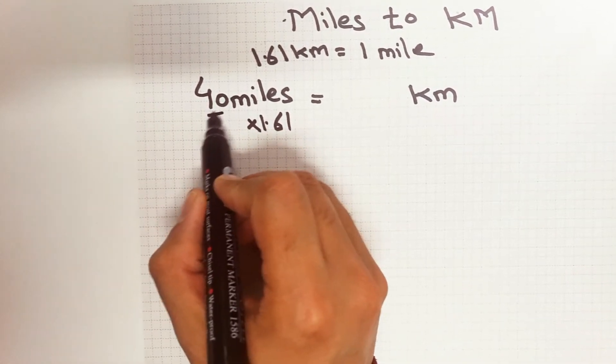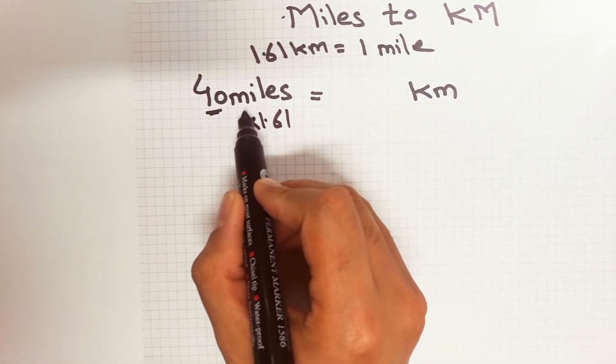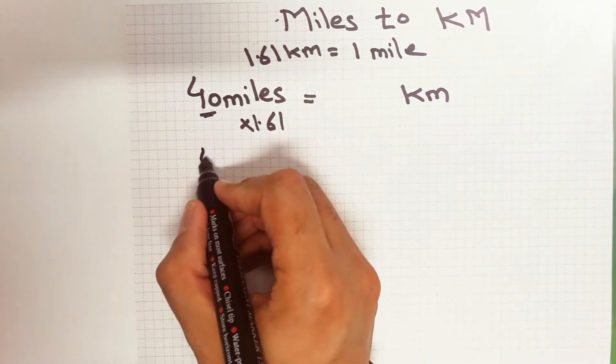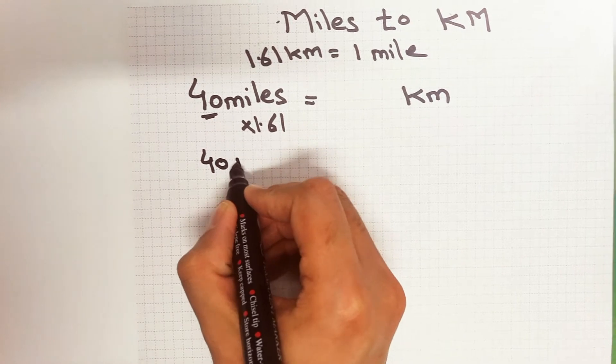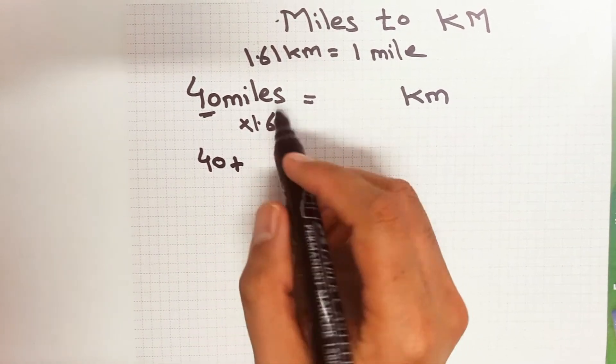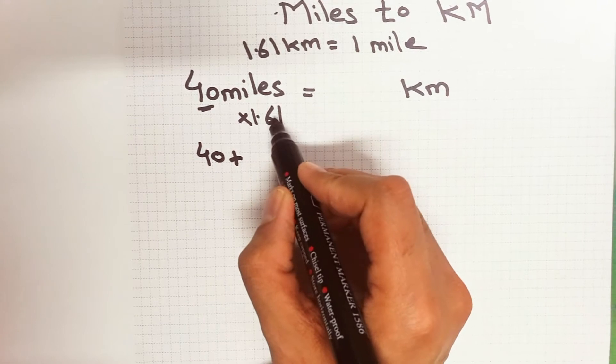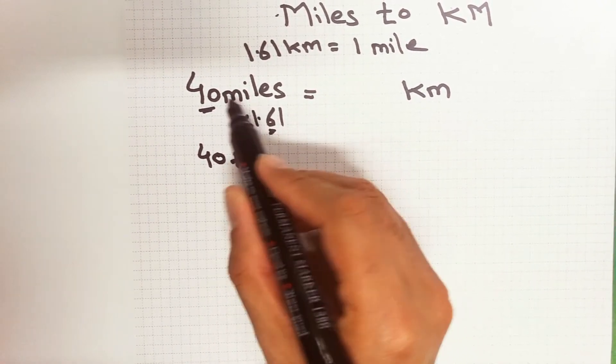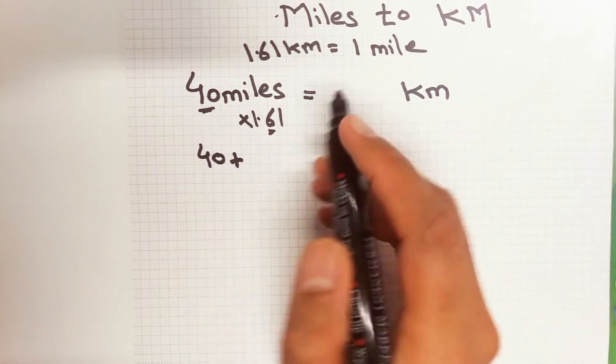So 40 multiplied by 1 equals to 40. Plus, and then what we will do is, this is 1.61 so after the point the value is 6. This 6 we will multiply with this first value which is 4. So this is a trick: 6 multiplied by 4 equals to 24.